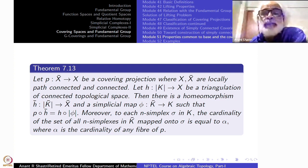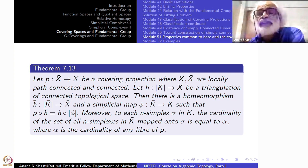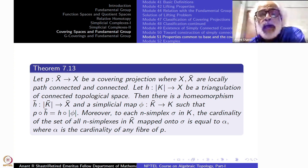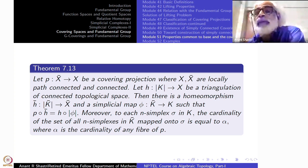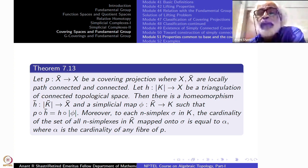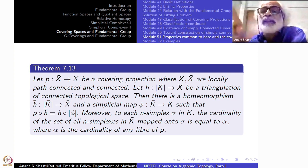Moreover, for each n-simplex of K, the cardinality of the set of n-simplexes in K̄ above it equals α, where α is the cardinality of any fiber. This is where connectivity is necessary: if X is connected, the cardinality of the fiber is a constant. So every n-simplex of K has exactly α many simplexes in X̄ above it.